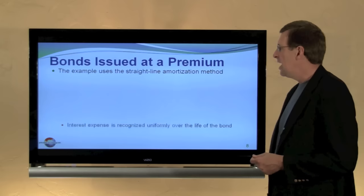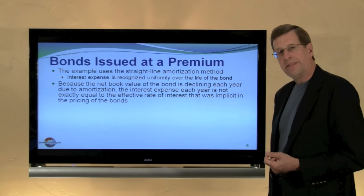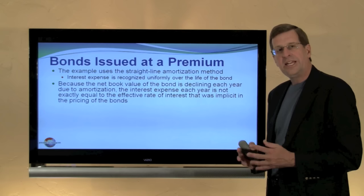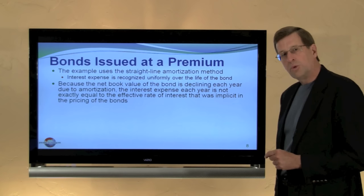This example uses the straight-line amortization method, where interest expense is uniformly recognized over the life of the bond. However, GAAP requires the use of the effective interest method unless the straight-line method does not produce a materially different result. The reason is simple: with the straight-line method, interest expense is the same each period even though the debt is changing slightly through amortization, so the true effective interest cost is not a constant percentage of the debt.